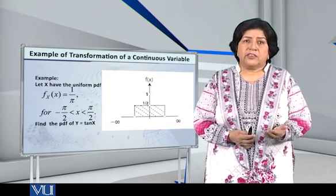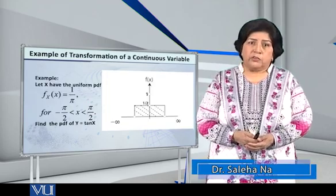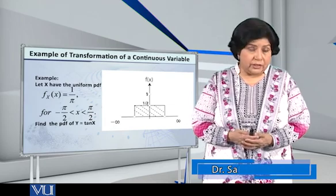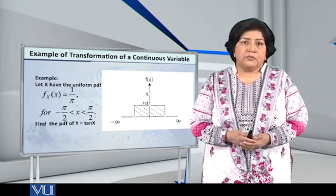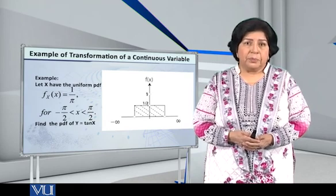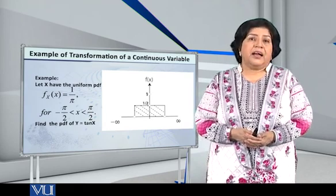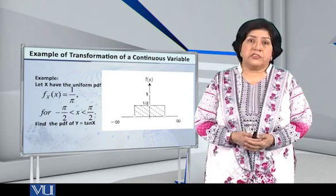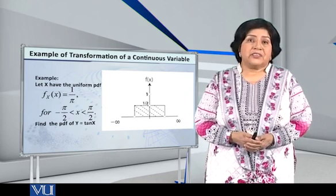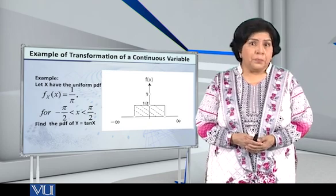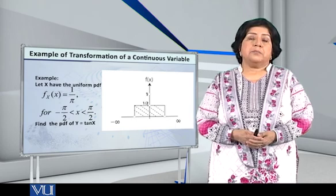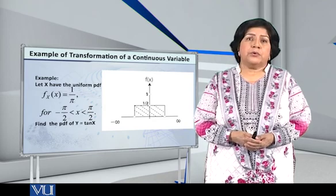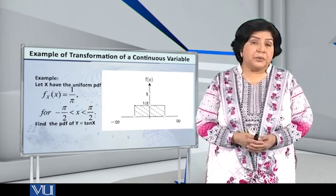So first of all, x has a uniform distribution. In particular, which uniform distribution am I talking about? I'm talking about the one for which f of x is given by 1 over π and the interval on the x-axis on which this distribution is defined, that is x lying between minus π by 2 and plus π by 2. Now, if you look at the graph, you will notice that it is correct because the area under the curve always has to be equal to 1.